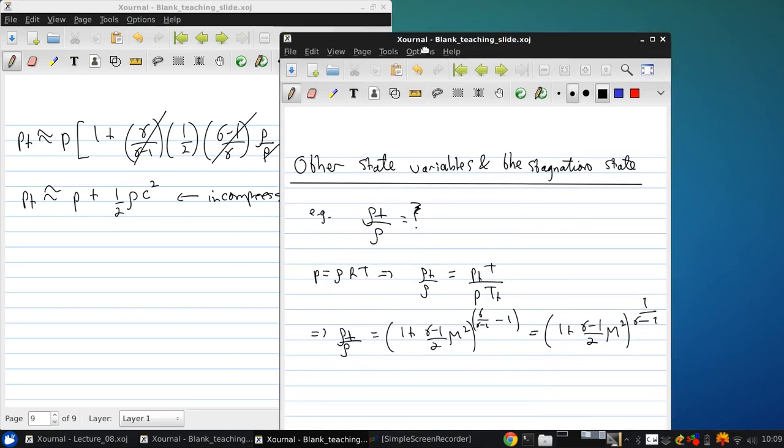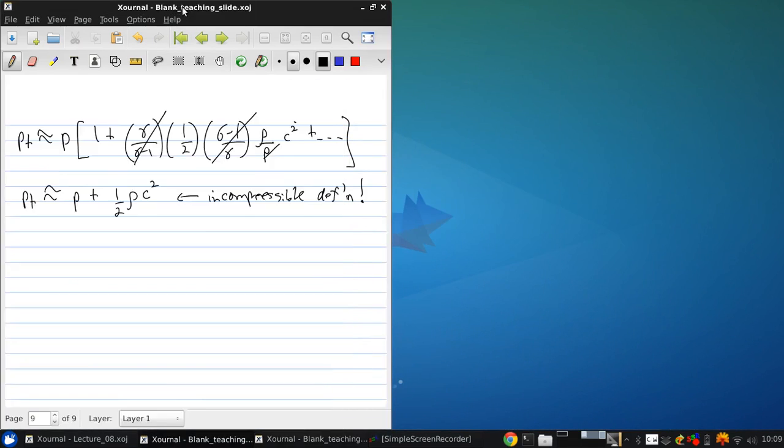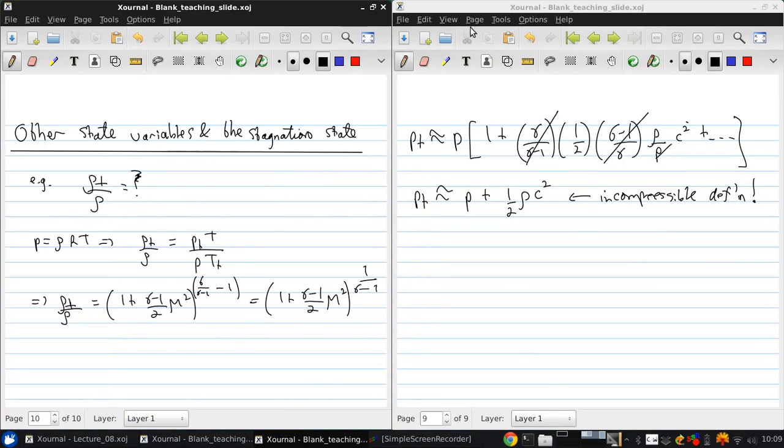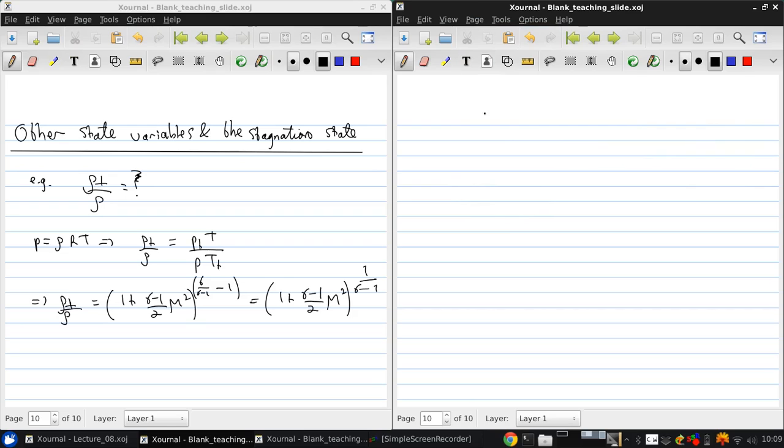Well, what about entropy? If you wrote st stagnation entropy minus the static entropy, this would be cp ln T over t minus R ln p over pt.